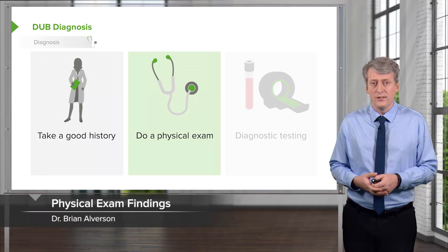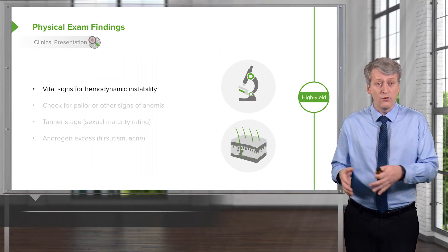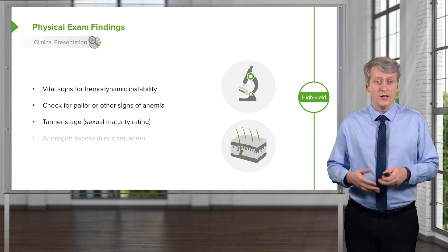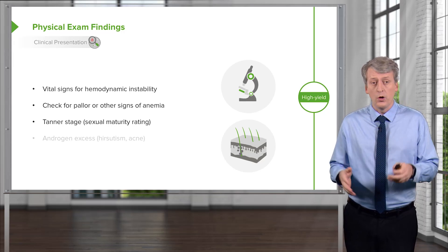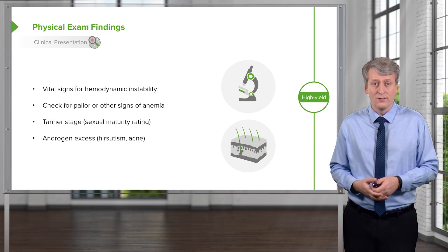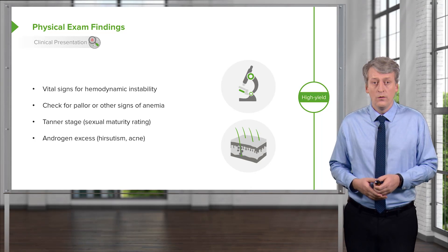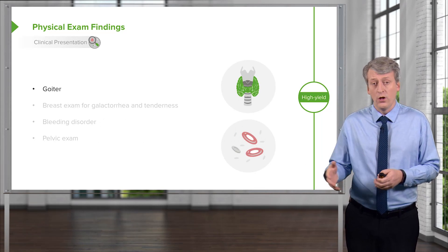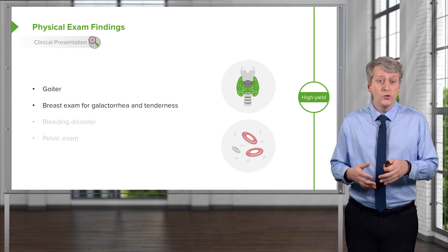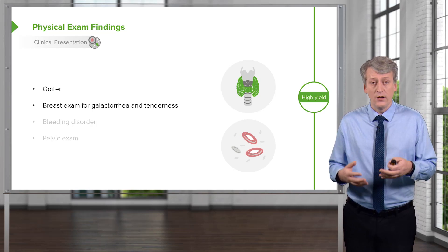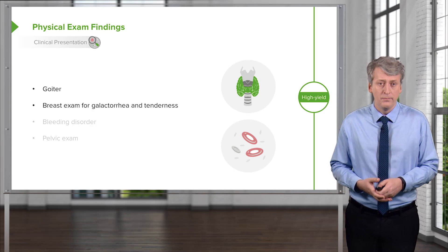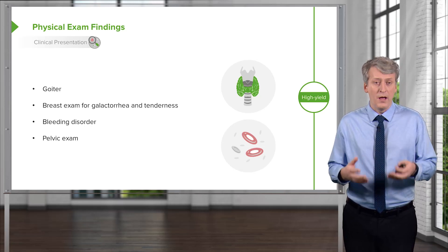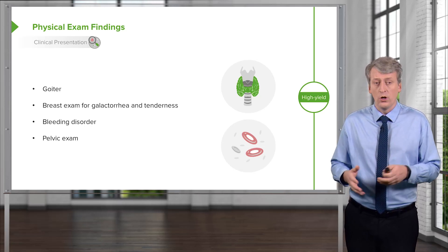Then we need to do a good physical exam. This includes looking at vital signs for hemodynamic instability from anemia, checking for pallor or other signs of anemia, and doing a Tanner stage to make sure their sexual maturity rating is appropriate. We should also look for signs of androgen excess, such as hirsutism or acne. We should check for a goiter, because abnormal thyroid function can result in dysfunctional uterine bleeding. We should do a breast exam for evidence of galactorrhea or tenderness, which might indicate a fundamental hormone problem. We should check for evidence of bleeding disorders such as easy bruising, and we should do a pelvic exam to assess for any internal pathology.